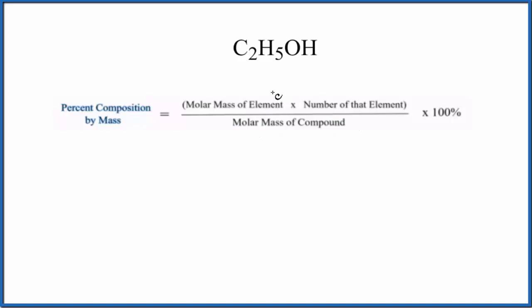So when we do that, this is what we end up with. The molar mass for ethanol is 46.08, and the units are grams per mole. So we know the molar mass for the compound.